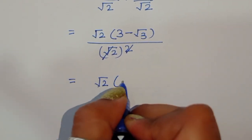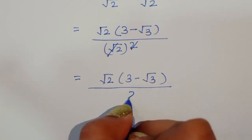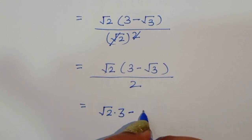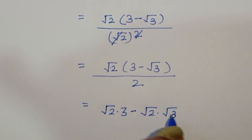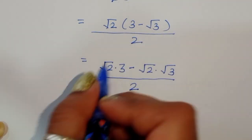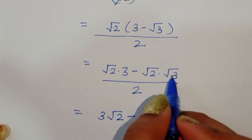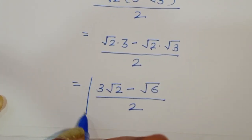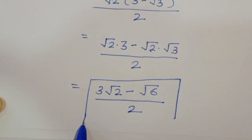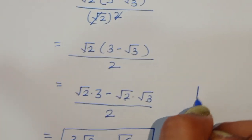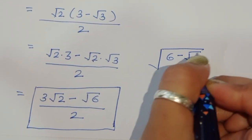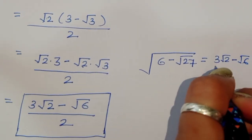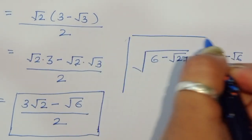Multiplying out: square root of 2 times 3 gives 3 square root of 2, and square root of 2 times square root of 3 gives square root of 6. So we get (3 square root of 2 minus square root of 6) divided by 2. Therefore, the value of square root of 6 minus square root of 27 is equal to (3 square root of 2 minus square root of 6) divided by 2. This is the solution.